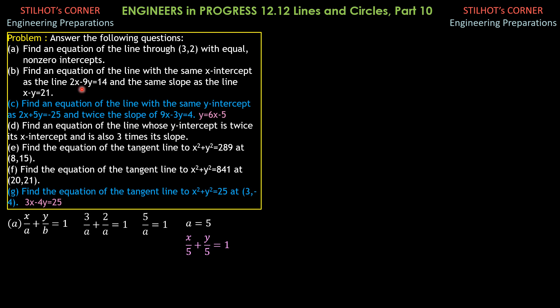First, for the line 2x minus 9y equals 14, let's transform this to intercept form by dividing everything by 14. So we have 2x over 14 minus 9y over 14 equals 1. After simplifying, that's x over 7 plus y over negative 14/9 equals 1. So the x-intercept is 7, and the y-intercept is negative 14 over 9, but it's the x-intercept that is important. So a is 7, and the partner of that is 0, which is the intersection with the x-axis.